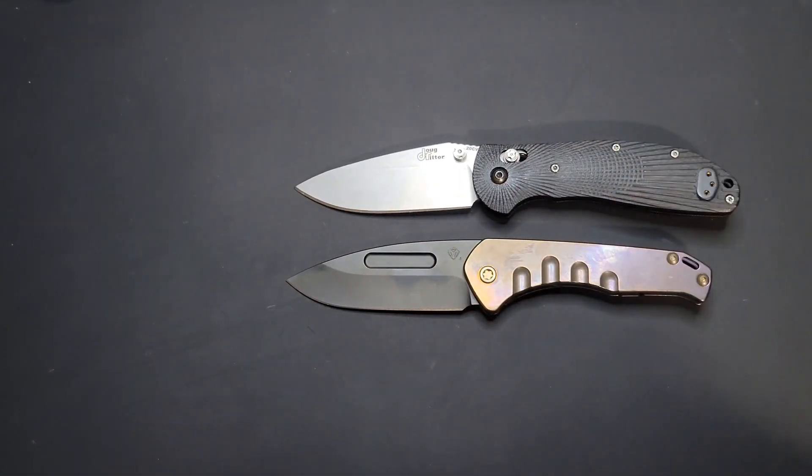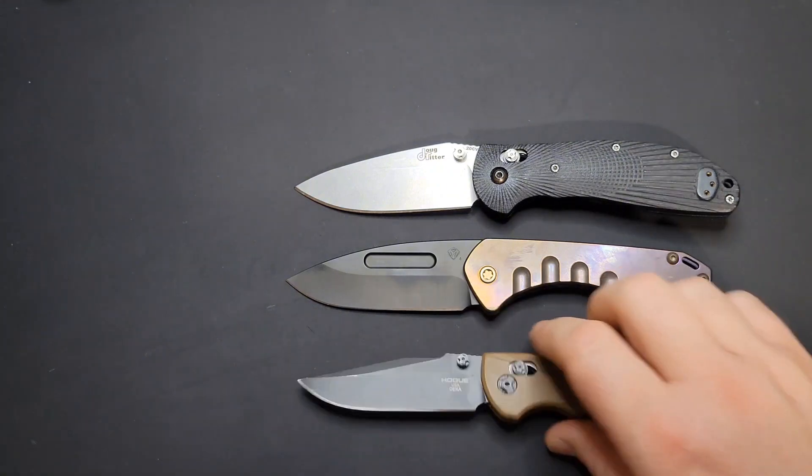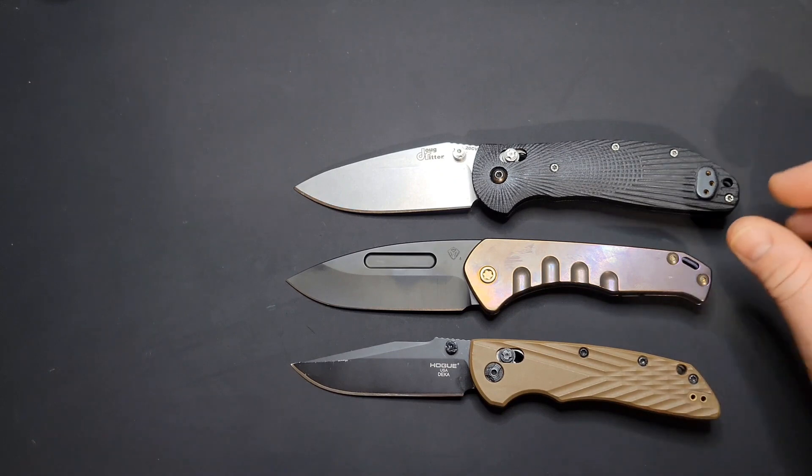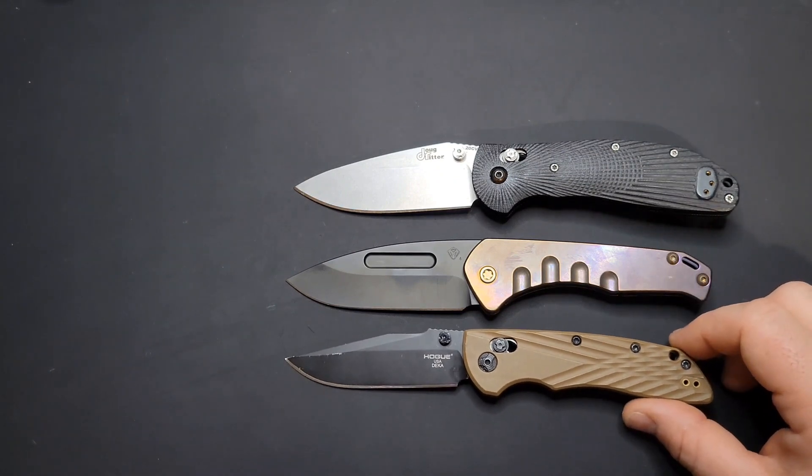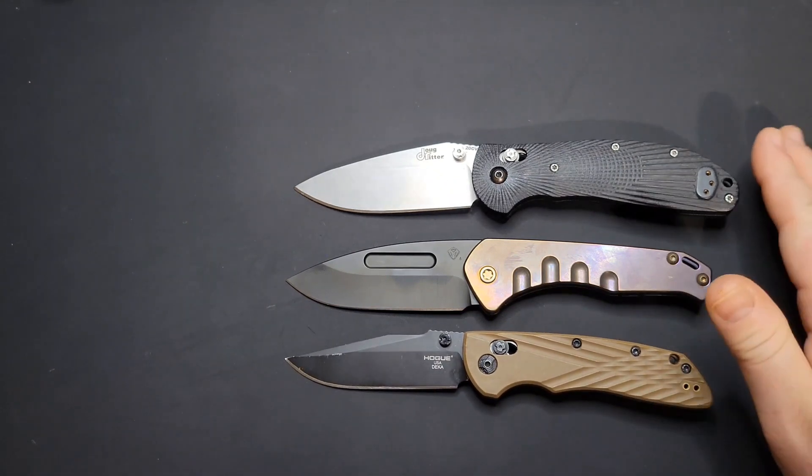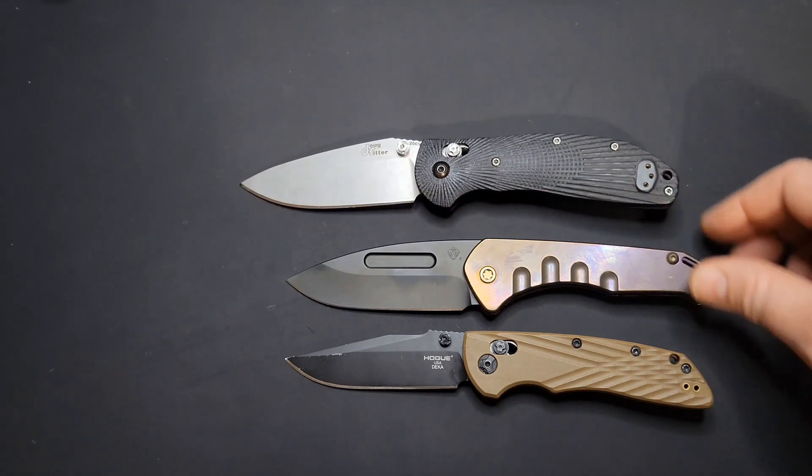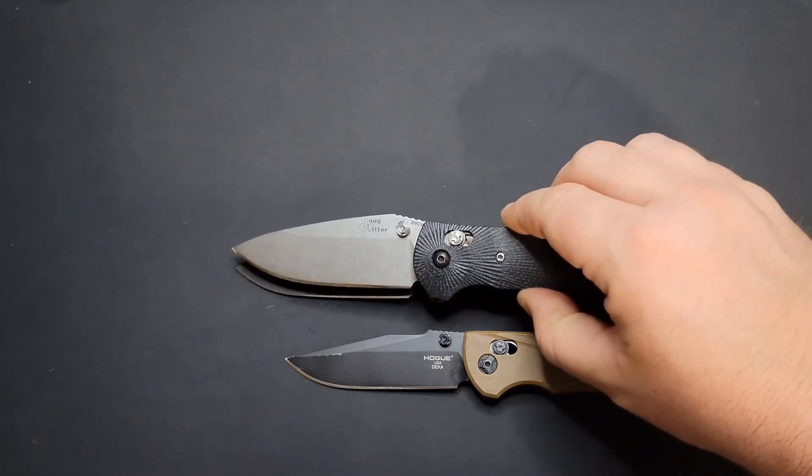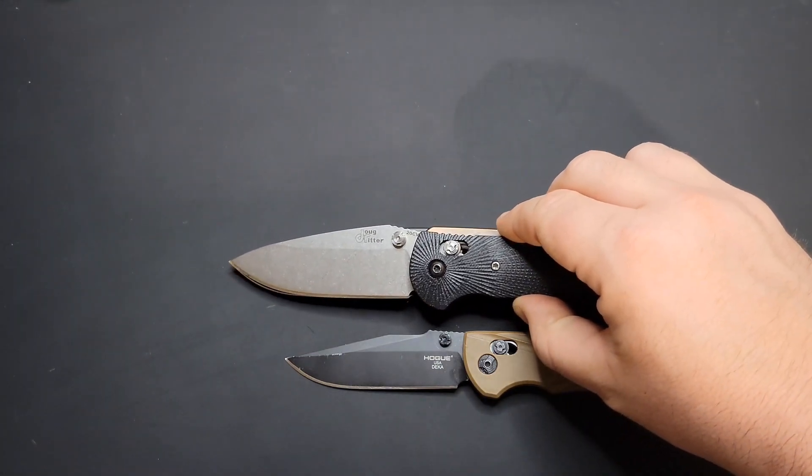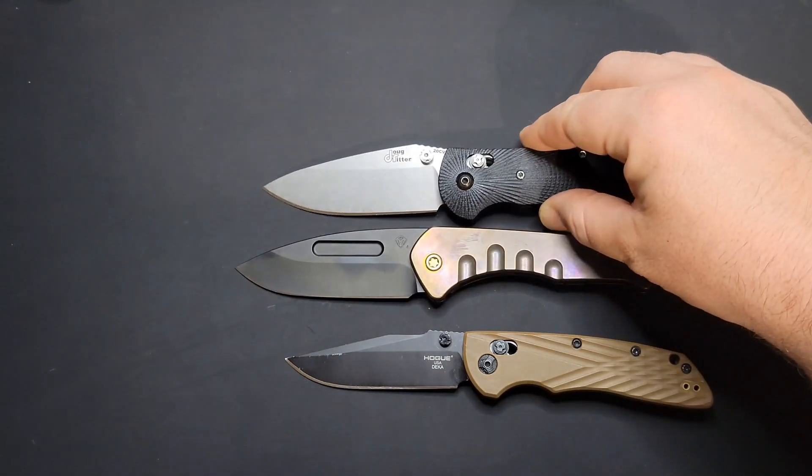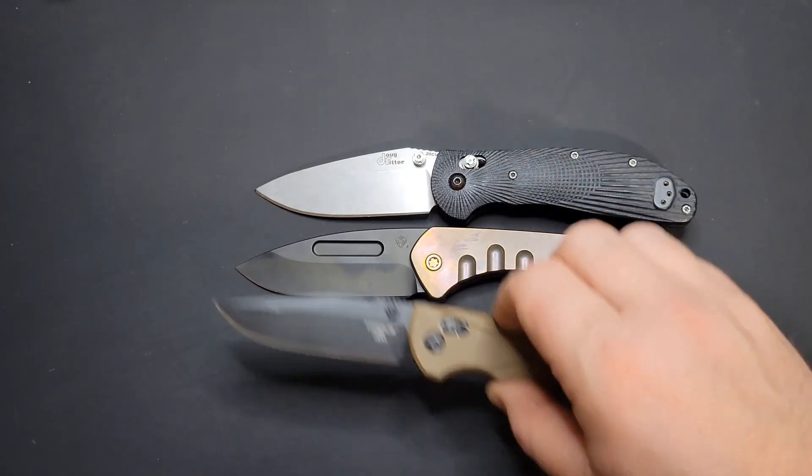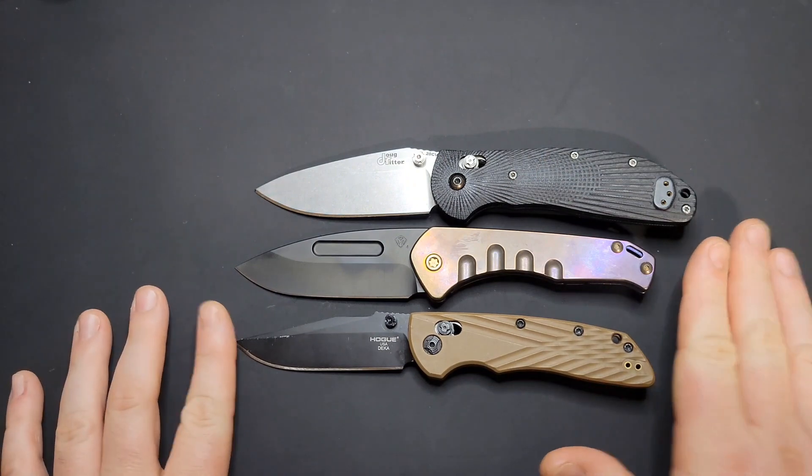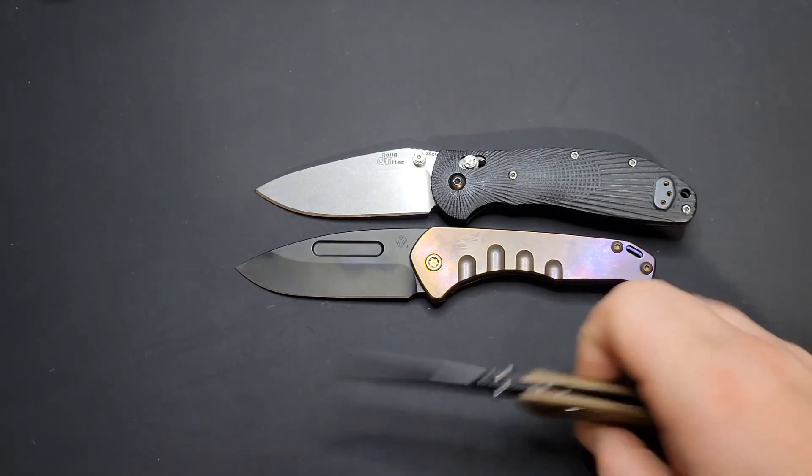Go ahead and get size comparisons out of the way here, give you a good idea what you're looking at. That's a Doug Ritter Hogue RSK MK1. Yeah, looking at it, it's actually a little shorter in overall length than the RSK MK1. Cutting edge, looks like the RSK MK1 is right at it with cutting edge too. Cutting edge on the Deka falls a little short, but overall length it's about the same as the Deka, which is kind of crazy.